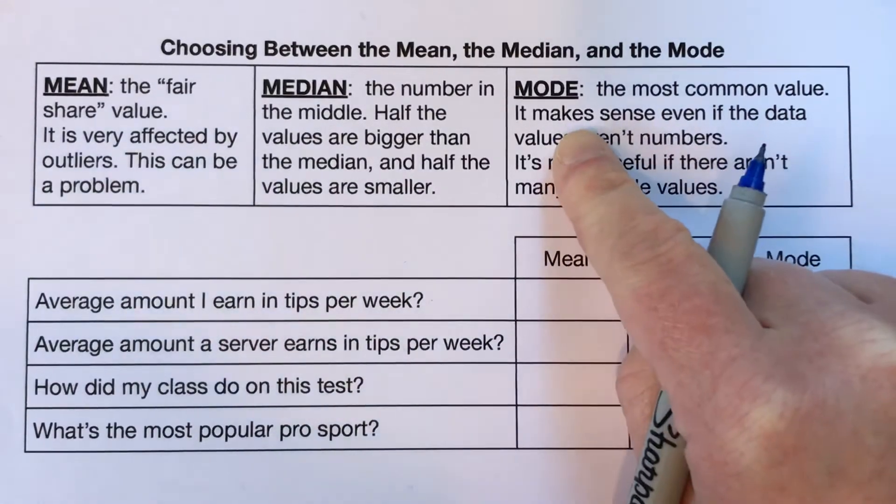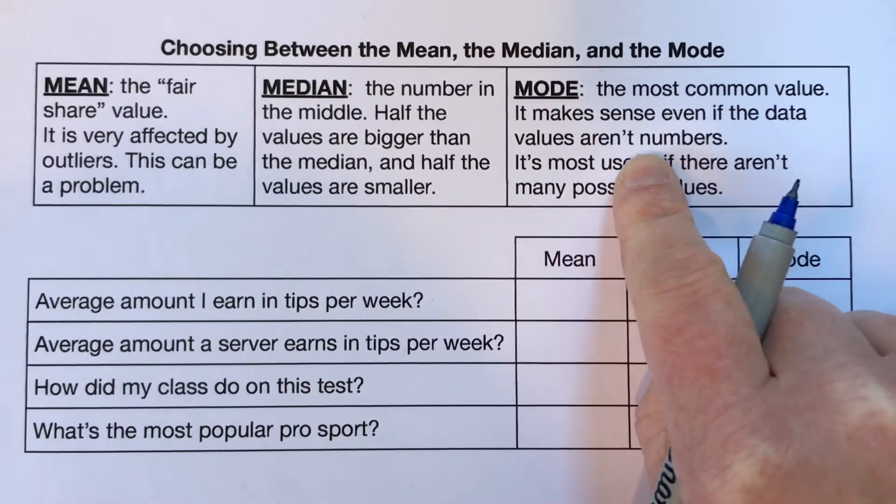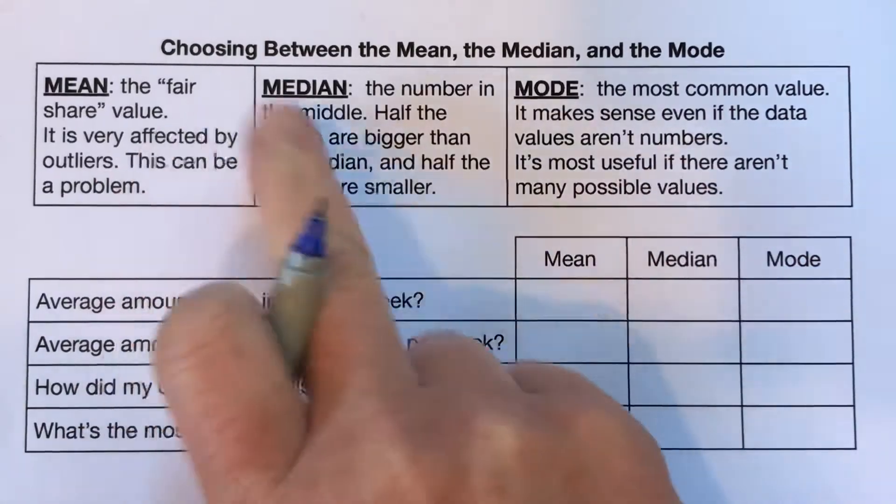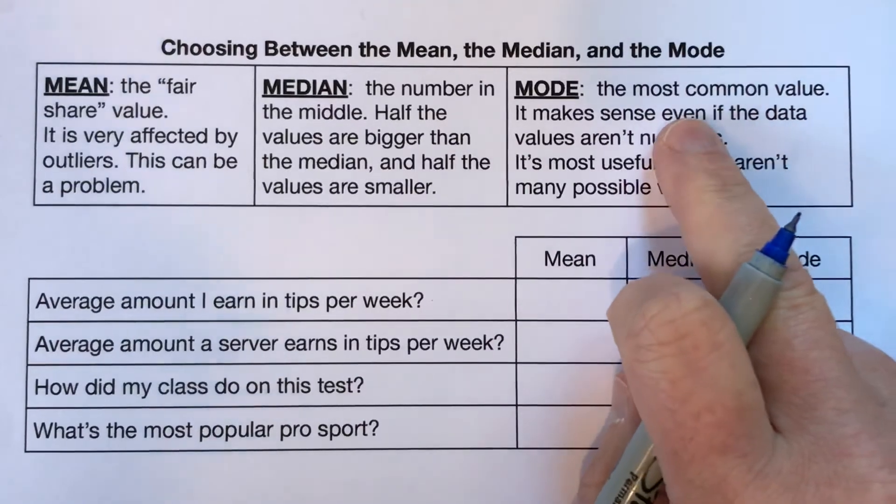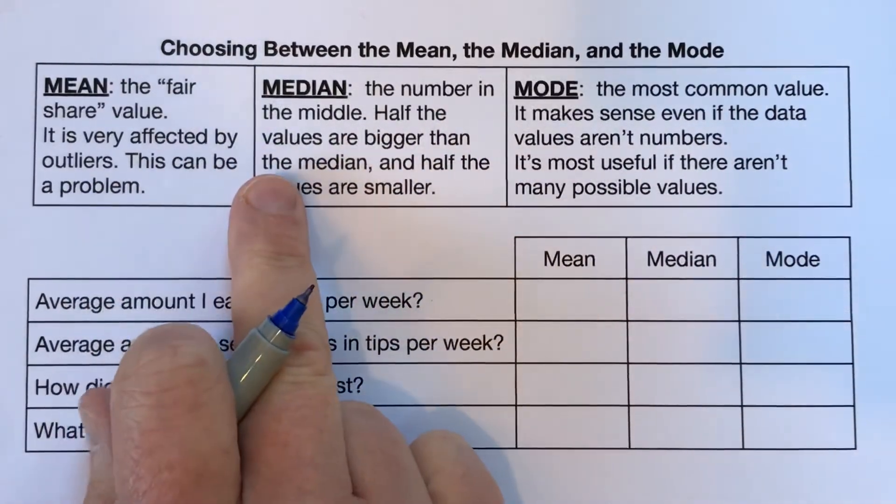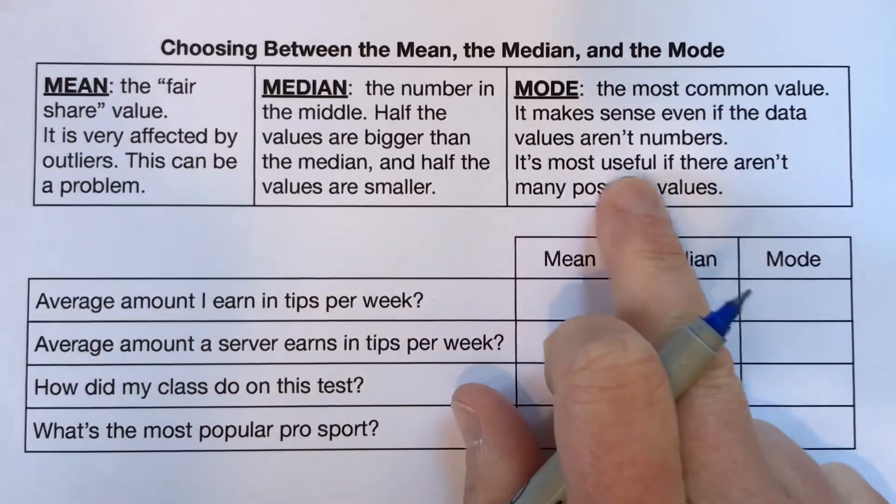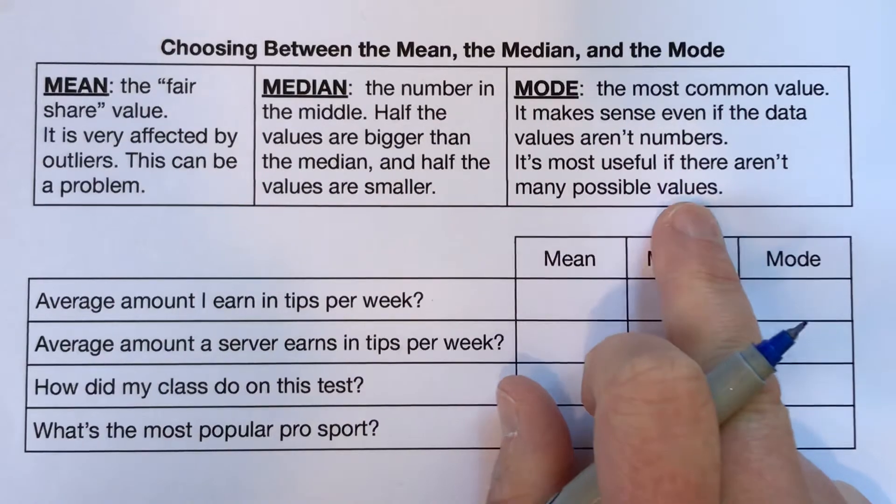So some things to remember about the mode when we're choosing is the mode makes sense even if the data values aren't numbers, where the mean and median don't. If you're looking at favorite colors, it makes sense to talk about the mode, but it does not make sense to talk about the mean or median. And another thing about the mode is it's most useful if there aren't very many possible answers or possible data values.